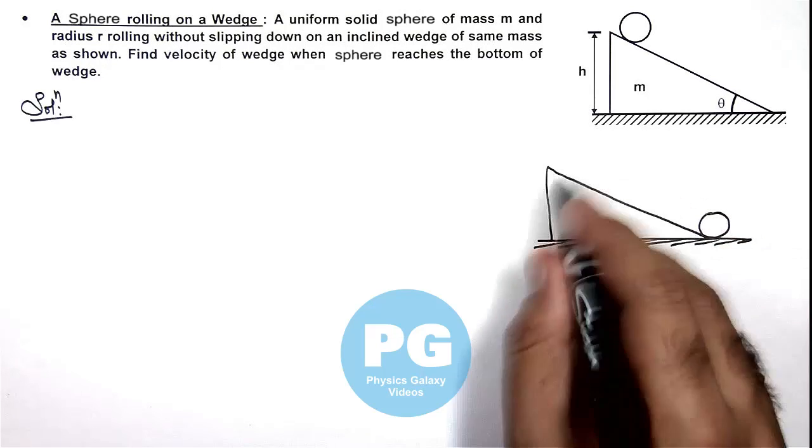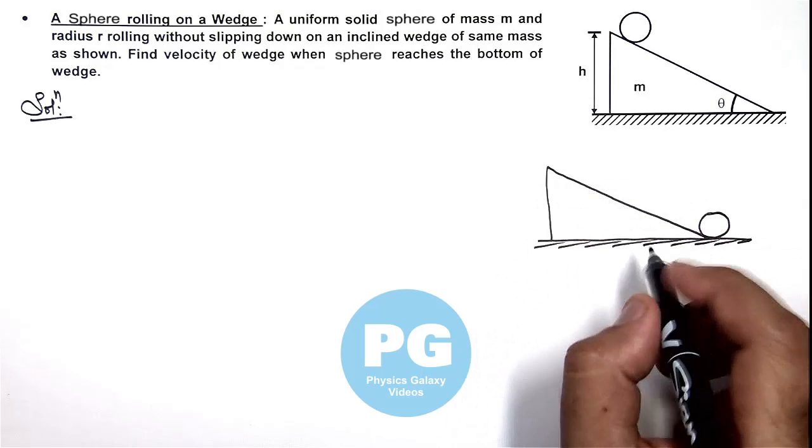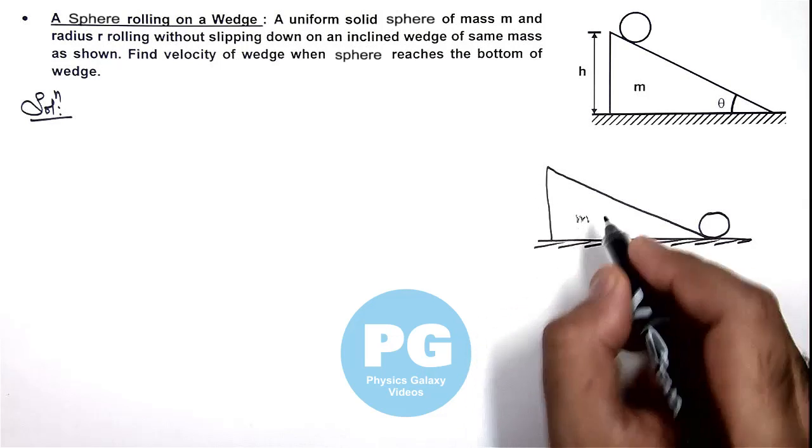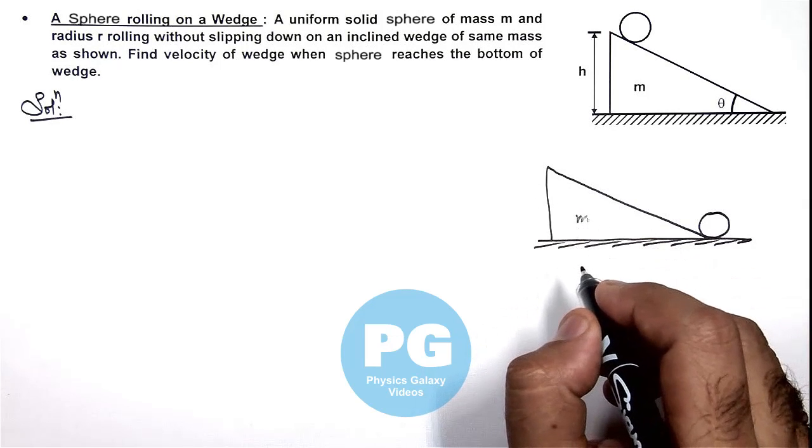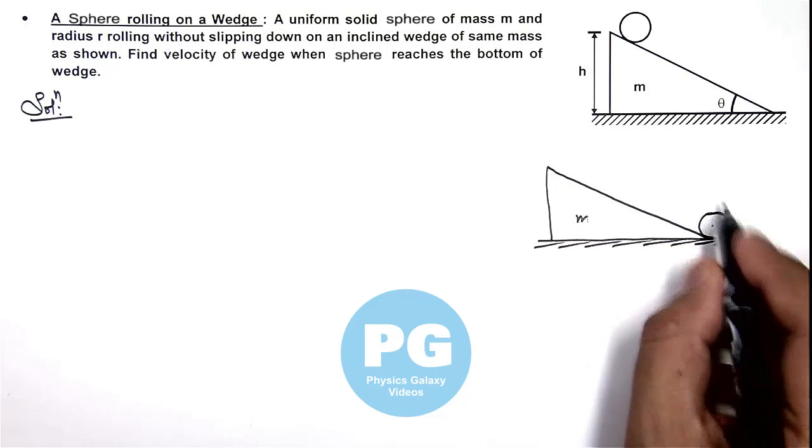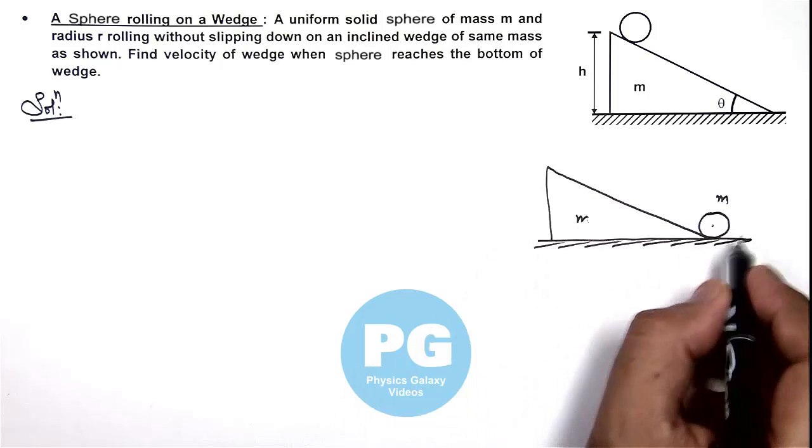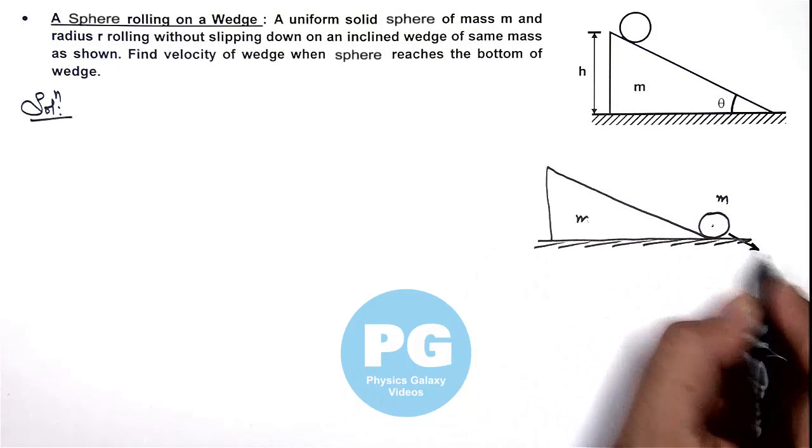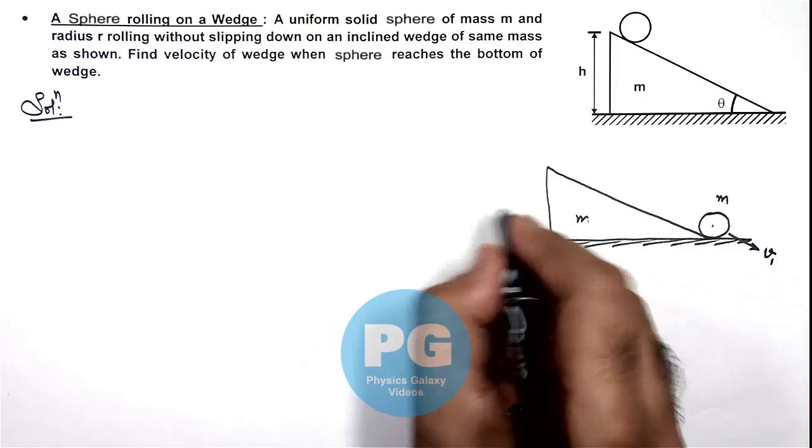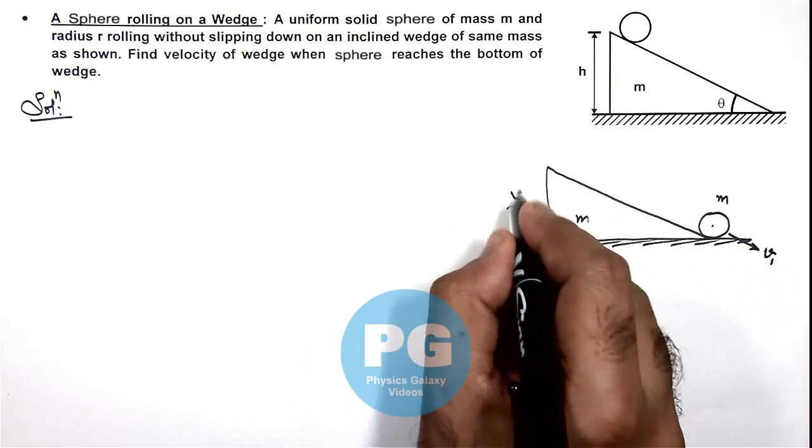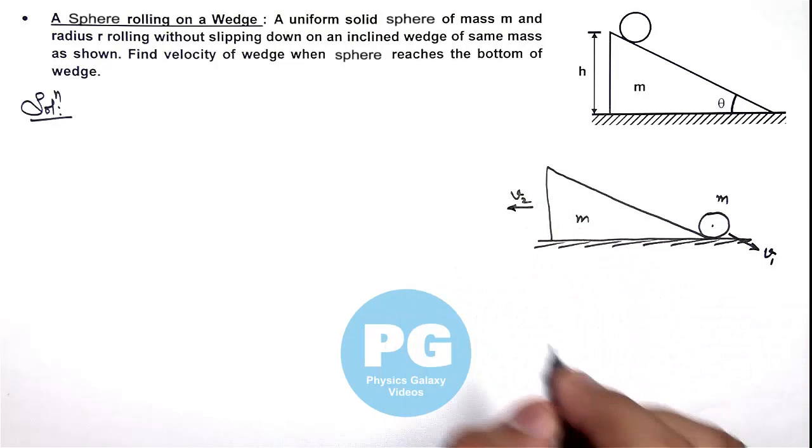So the system center of mass must be at rest. Here the wedge is of mass m and the sphere is also of mass m. Here we can consider if this sphere retains a velocity v1 with respect to wedge, and wedge is moving toward left with a velocity v2 with respect to ground.